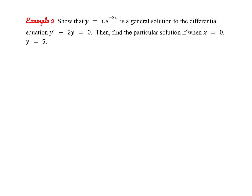Let's try another one. We're going to show that y equals c·e to the negative 2x is a general solution to y prime plus 2y equals 0, and then find the particular solution when x equals 0 and y equals 5. To verify, we first need y prime. Taking the derivative using the chain rule gives y prime equals negative 2c·e to the negative 2x.